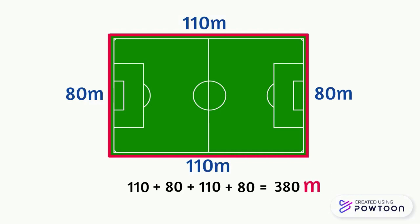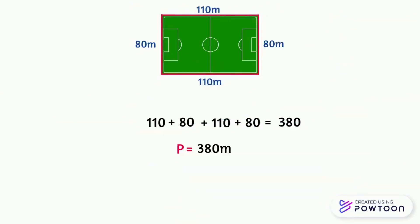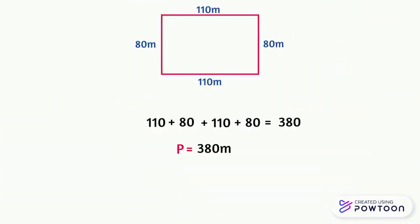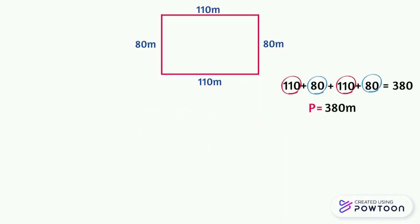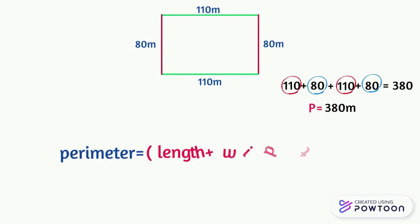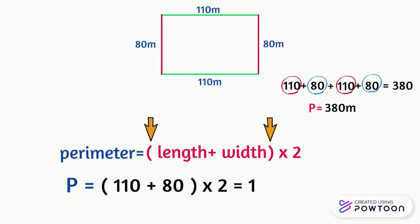The perimeter is simply written as P. Perimeter equals 380 meters. This field has a rectangular shape, and to find its perimeter we repeated 110 twice and 80 twice, because in a rectangle the opposite sides are equal. So when we want to find the perimeter of a rectangle, we add the length with the width, then multiply the result by 2. Remember to put the parentheses around the length and the width to calculate them together.